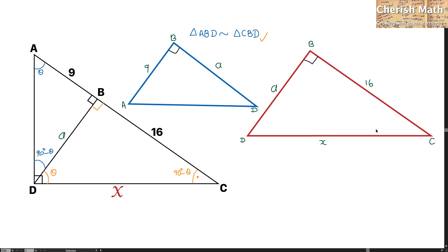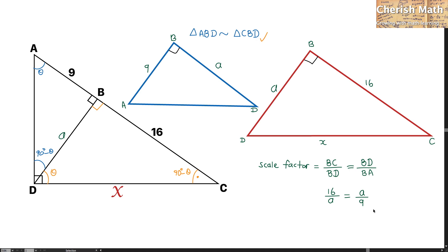To solve the problem, I am going to use the scale factor, which is the ratio of similar sides. I pick the first ratio: BC divided by BD. This same scale factor applies to the corresponding side: BD divided by BA. Substituting the values and doing cross multiplication, the value of A is 12 units.